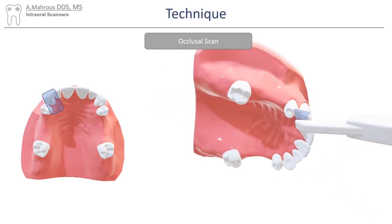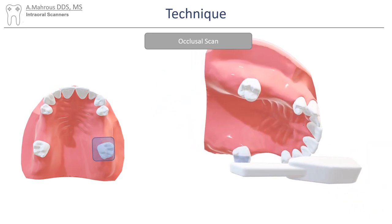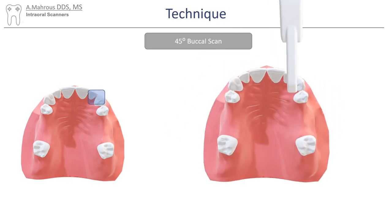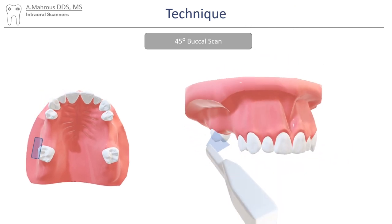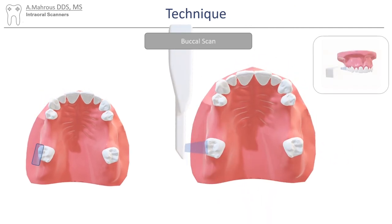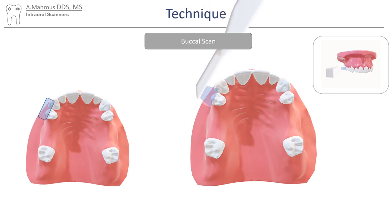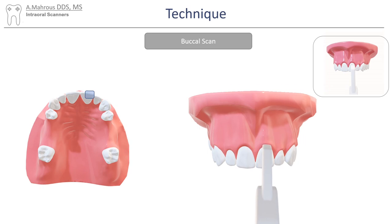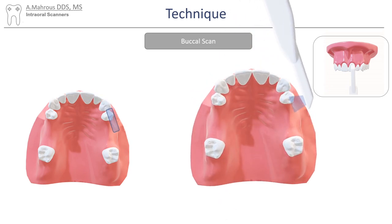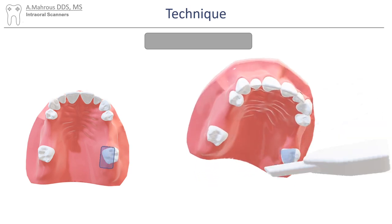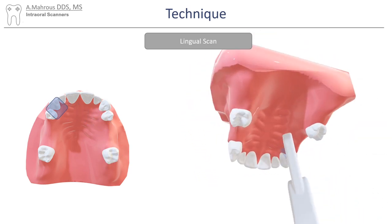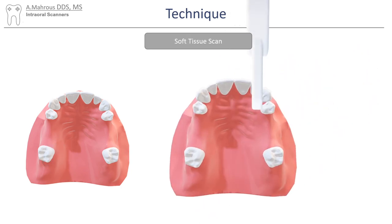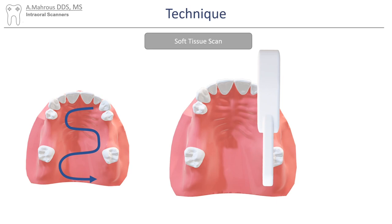During the scan, the scanner is moved around the arch from the occlusal direction. The 45 degree scan is then started and the scanner is taken across the arch. The buccal scan is then started, and as always, the scan is taken across the arch — making sure to move the scanner in a vertical direction as well to capture as much vertical height of the tissue as we go around the arch. The scanner then moves to the lingual side and the lingual scan is started and moved around the arch. Finally, the soft tissue scan of the palate is completed by going in a zigzag or S-shaped direction.